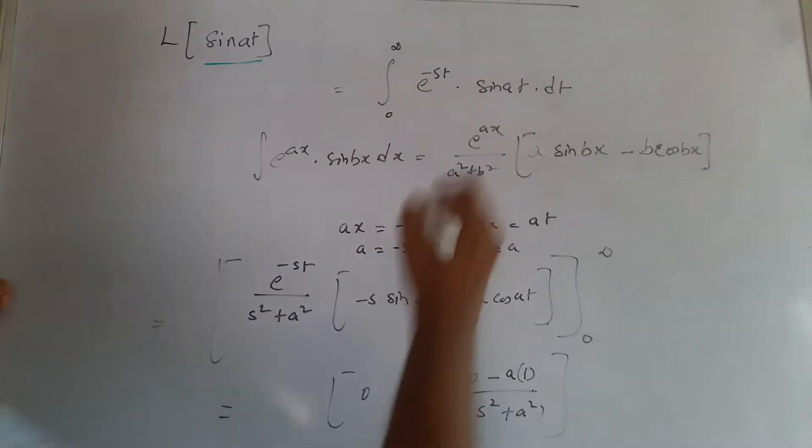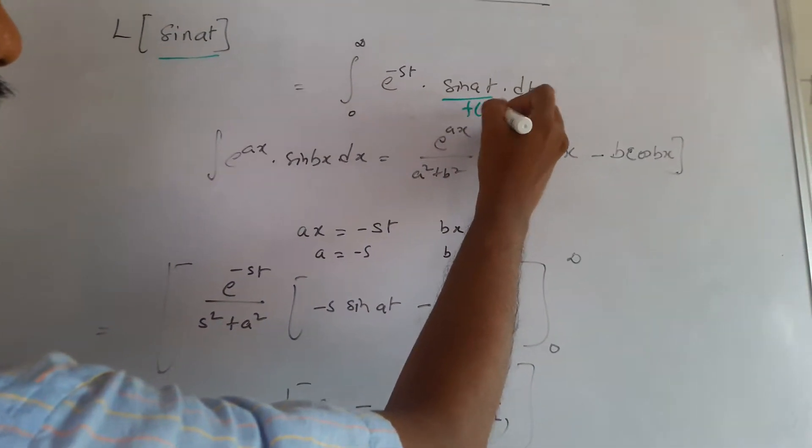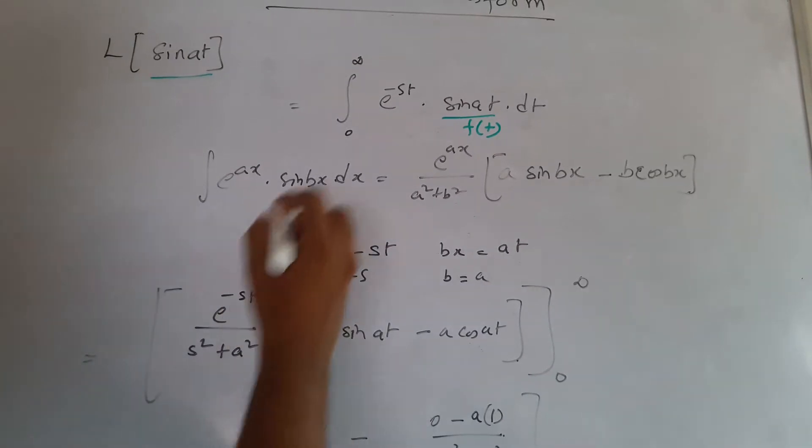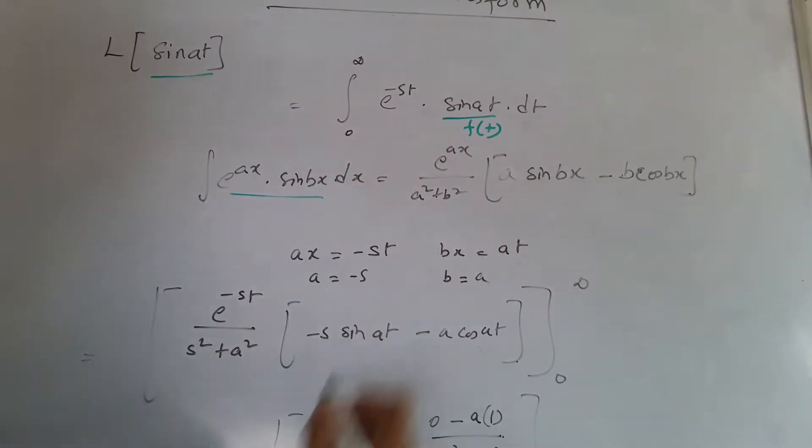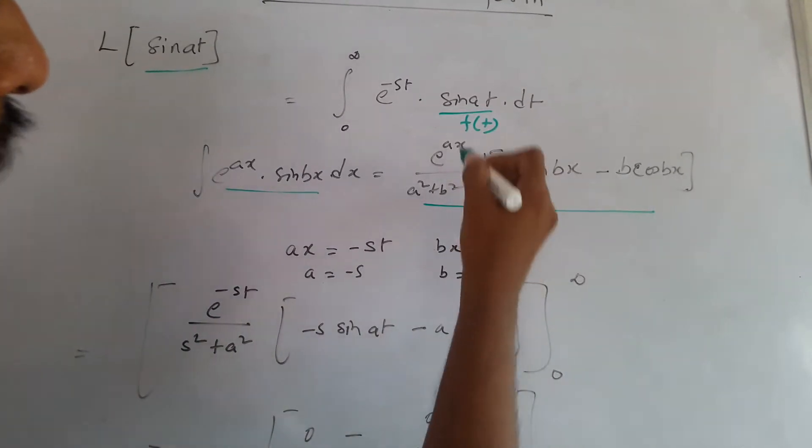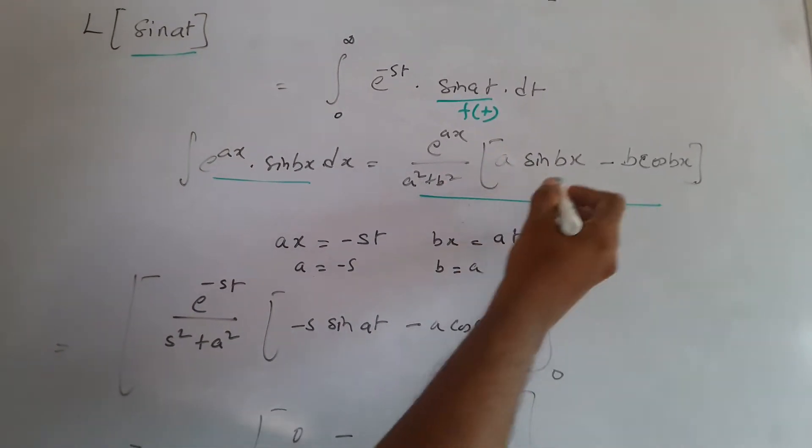The Laplace transform of sine at. The function is sine at, which is in the form of e to the power of ax times sine bx dx. We have a formula for that: e to the power of ax by a times (a squared plus b squared).